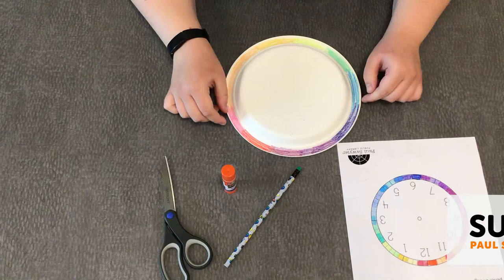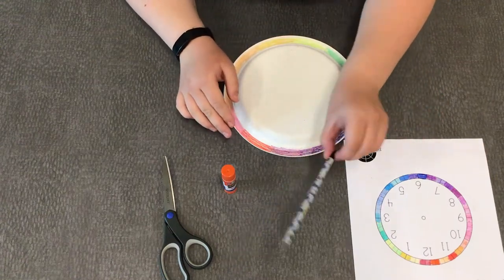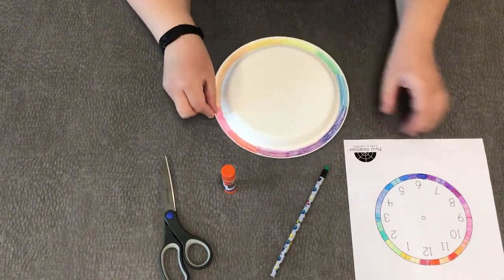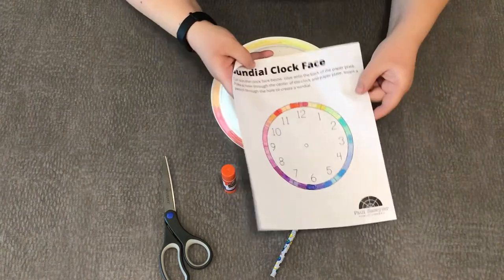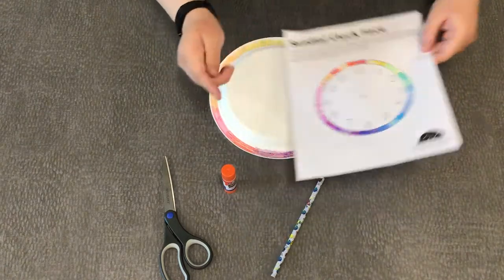So to get started, in your kit what was provided was one pencil, a paper plate, and the sundial clock face worksheet.